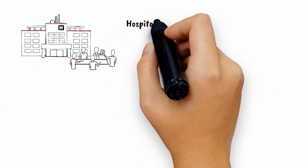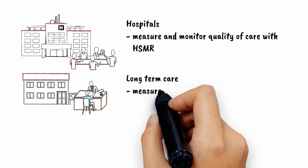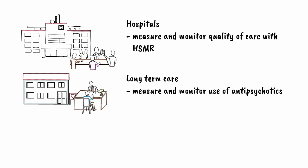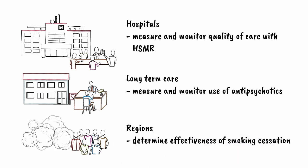Let's look at a few examples. Hospitals use the hospital deaths or HSMR indicator to measure and monitor the quality of care they're providing. Staff in long-term care facilities use the potentially inappropriate use of antipsychotics in long-term care indicator to identify areas for improvement and to evaluate performance improvement initiatives. And the smoking indicator, which measures the percentage of people in a specific population who smoke, helps regions determine the effectiveness of their smoking cessation initiatives.